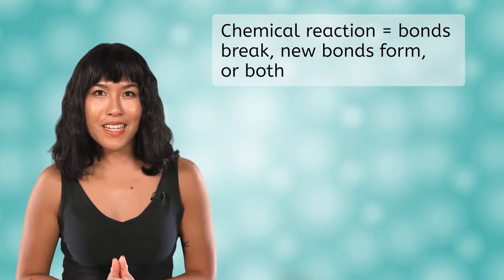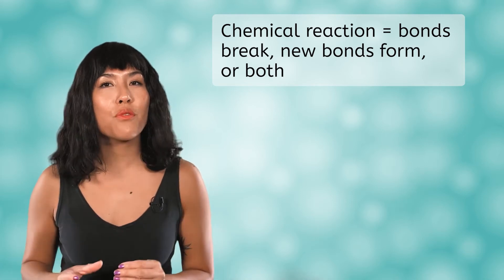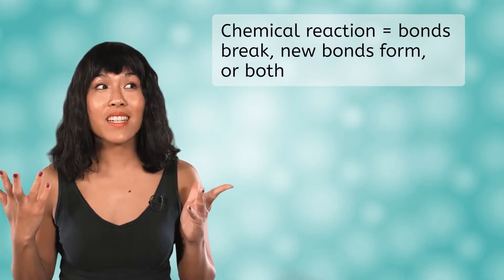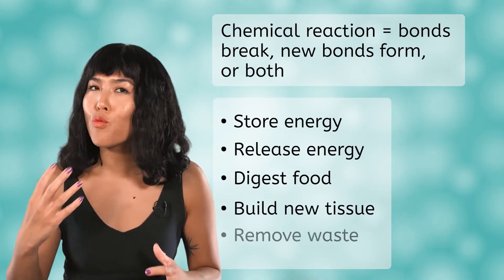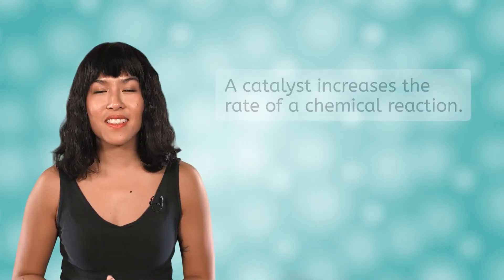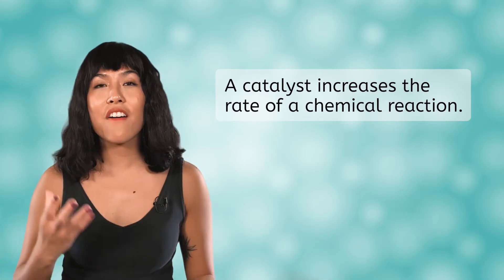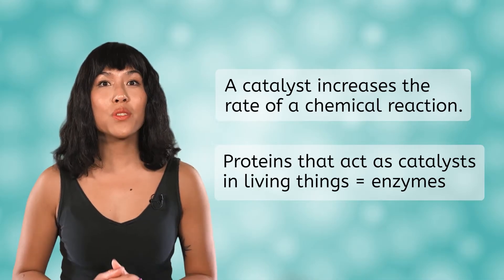Do you remember what happens in a chemical reaction? In a chemical reaction, bonds between atoms break, new bonds form, or both. In other words, atoms and molecules get rearranged to form new substances. Life depends on continuous chemical reactions to store energy, release energy, digest food, build new tissue, remove waste, and more. Our bodies are giant chemical reaction machines. But many of the chemical reactions we depend on wouldn't happen on their own, at least not as quickly as we need them to. Chemical reactions can be sped up by substances called catalysts. A catalyst increases the rate of a chemical reaction. Some proteins act as catalysts inside living things — these biological catalysts are called enzymes.